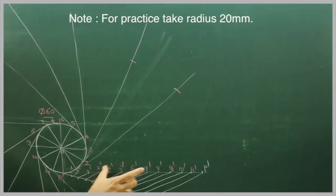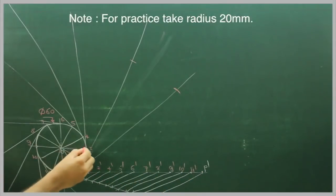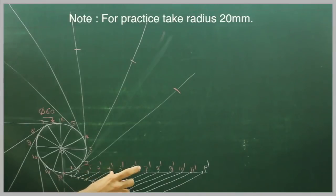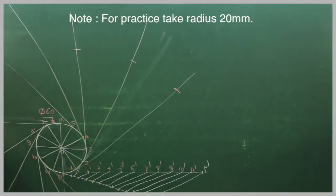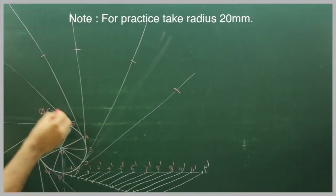Then same way 3' to P' will cut from 3. We will take 4' to P' in our compass and from 4 we cut on this side. 5' to P' cuts from 5.